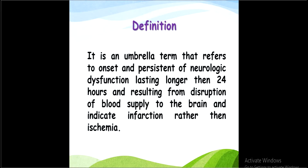The definition of cerebrovascular accident: it is an umbrella term that refers to onset and persistence of neurologic dysfunction lasting longer than 24 hours, resulting from disruption of blood supply to the brain, and indicates infarction rather than ischemia. This means our brain's blood supply is obstructed — this obstruction condition is called infarction — so oxygen supply will not reach the brain.